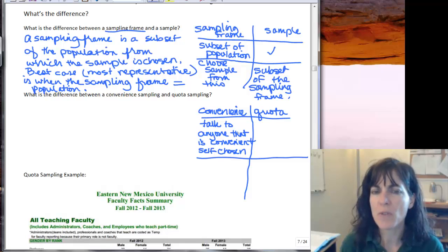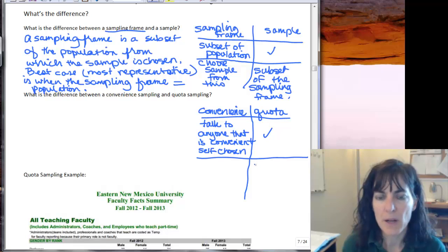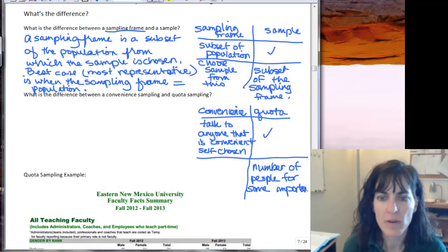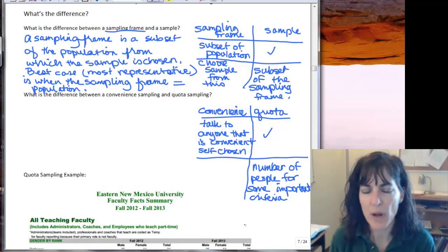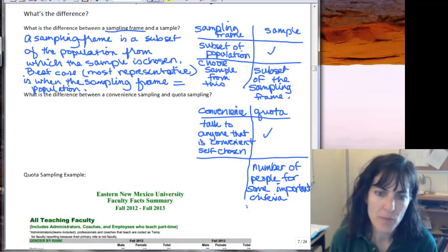So when the person who decides just based on whatever characteristics they see whether or not they want to talk to the person, then you've got a convenience sample. And for a quota sample you kind of do that but you also have number of people for some important criteria that you want to talk to and it's going to be sort of representative of your population, based on population.